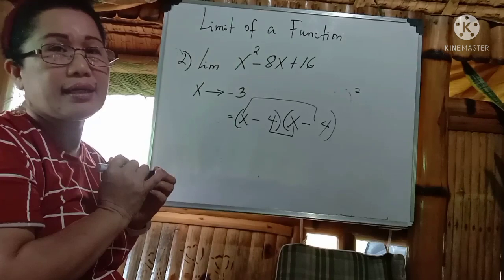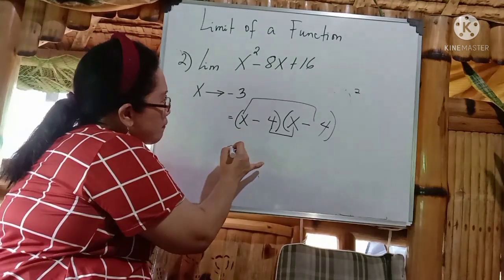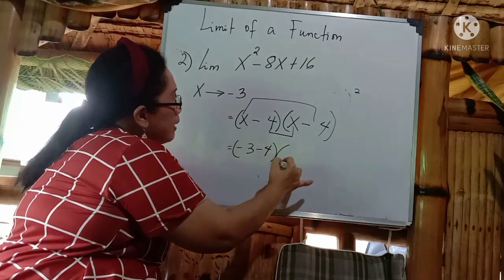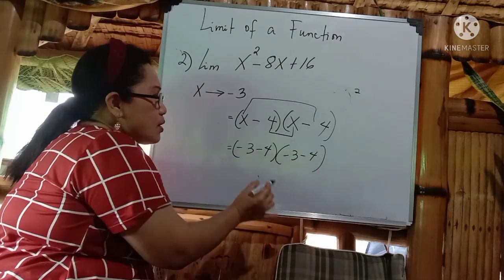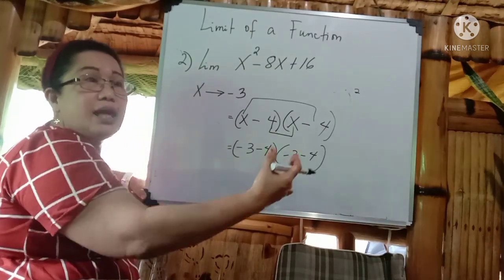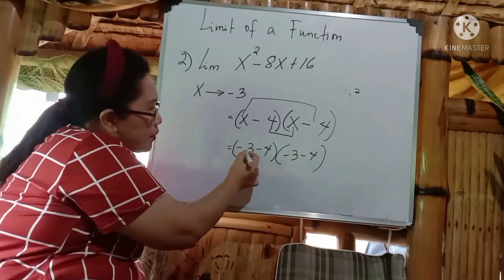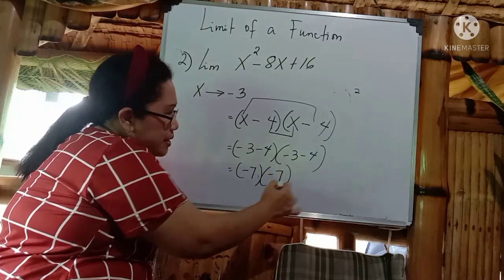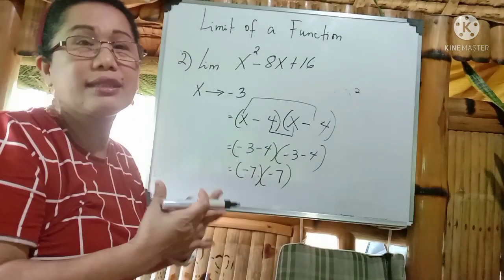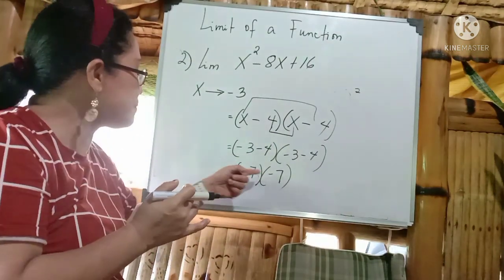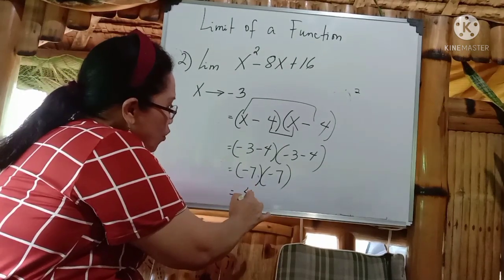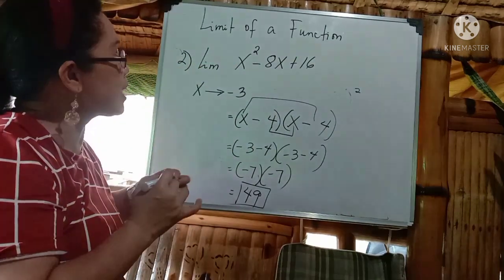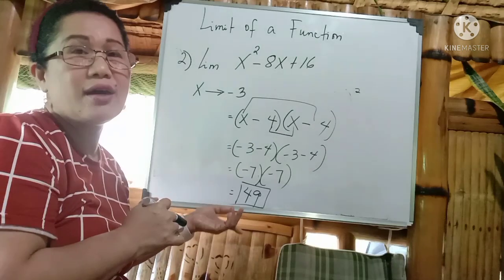When x approaches negative 3, we substitute the value of x. So we get (negative 3 minus 4) times (negative 3 minus 4). Negative 3 minus 4 gives negative 7, and negative 3 minus 4 gives negative 7 again. Multiplying two negative numbers gives a positive result, so negative 7 times negative 7 gives 49. Therefore, the limit of x squared minus 8x plus 16 when x approaches negative 3 is equal to 49.